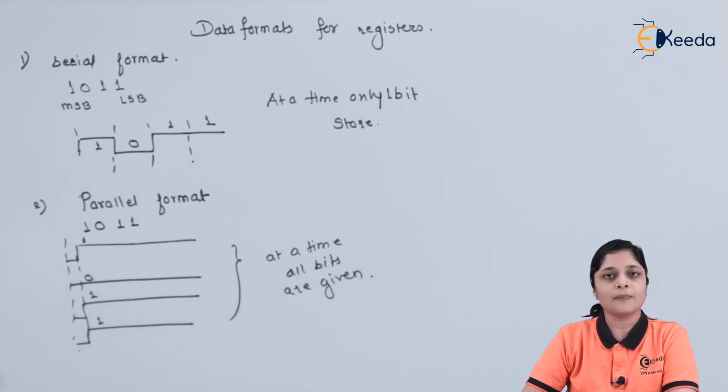This is the application of getting the information parallely and getting the information serially. The difference is that in serial format, at a time only single bit is stored. And if the application is related to the parallel format, then at a time all the bits are going to be stored in the register. This is the advantage of serial and parallel formats.